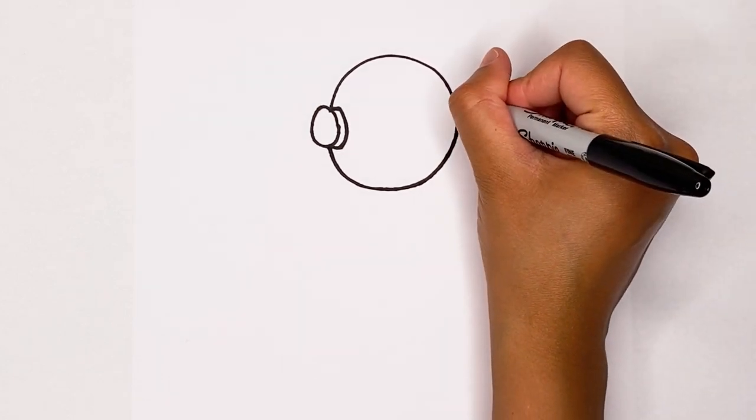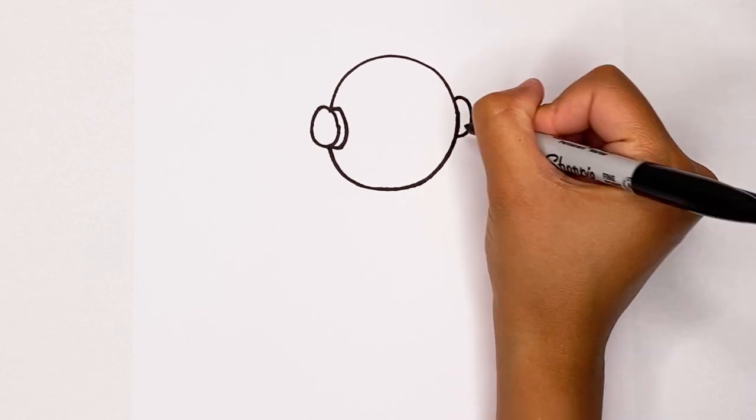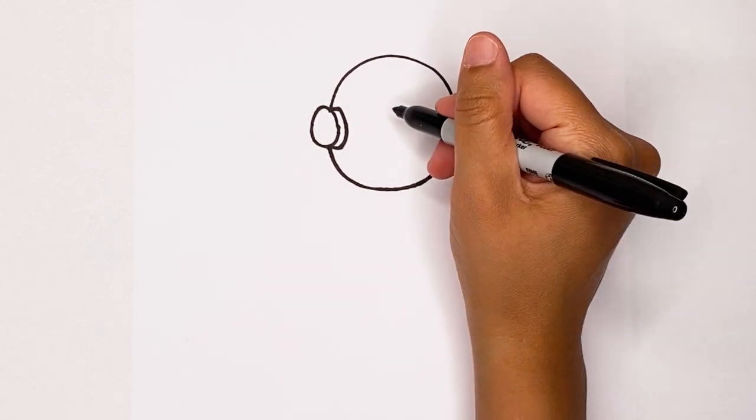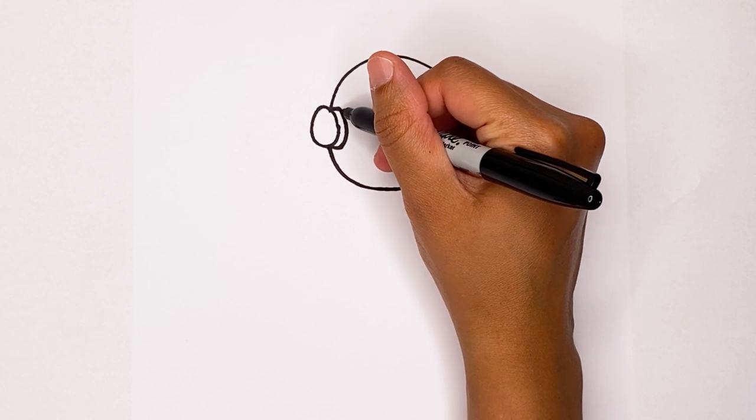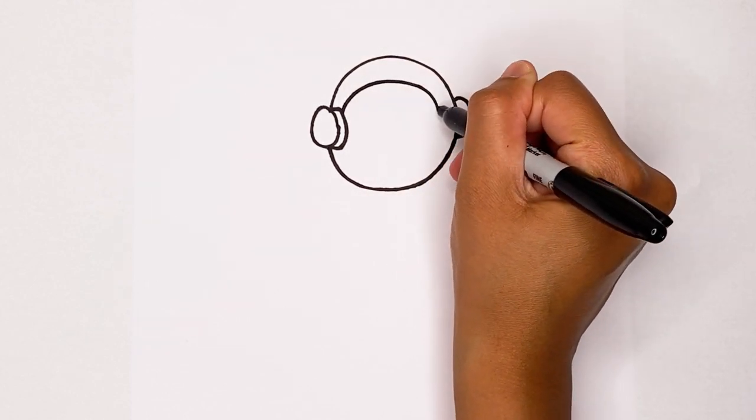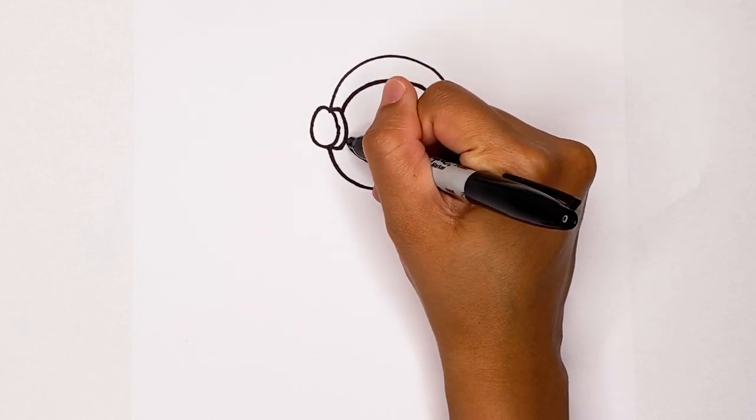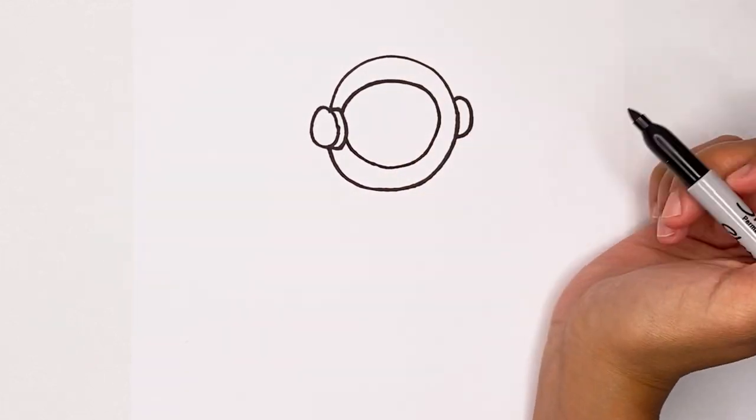Now let's make another circle right here. There we go. And then we're going to make a big curve like this that goes all the way around and bring it to the other side. There we go. It was kind of like his visor.